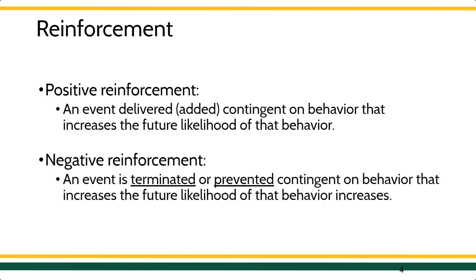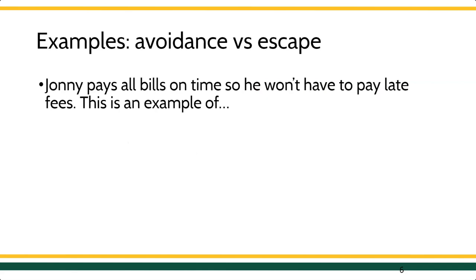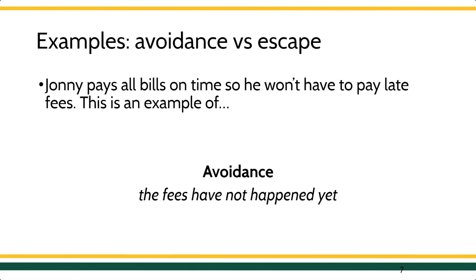That's the crux of negative reinforcement. The two words to keep in mind are escape and avoid. When we talk about negative reinforcement procedures, we're talking about behaviors that allow us to escape or terminate a negative reinforcer or aversive stimulus after it's been presented, or behaviors that allow us to avoid the delivery of that stimulus entirely. For example, Johnny pays all of his bills on time so he doesn't have to pay a late fee — this is avoidance, because he's preventing the fees from ever happening. If the fee was already there and he tried to get it removed, that would be escape.